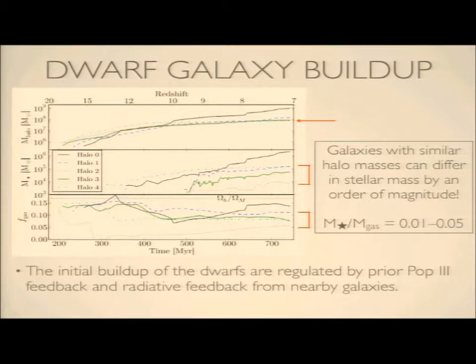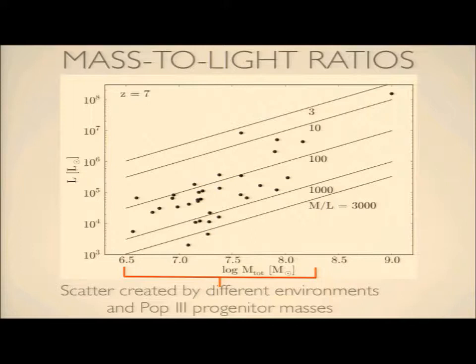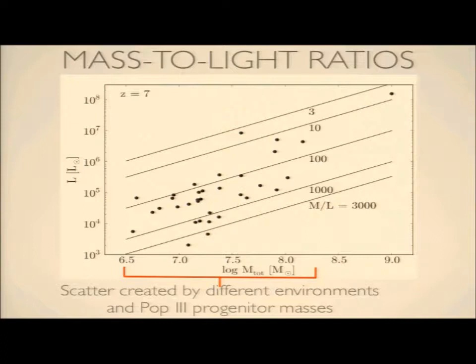If we look at their luminosities versus the halo mass, you can see these low mass halos, which can't cool by atomic line cooling yet, primarily depend on molecular hydrogen cooling — that produces the scatter. Because they can't cool rapidly, they can't form stars very efficiently, so they have a very low mass-to-light ratio between 1,000 to 10,000. But the most massive halos can start forming stars more efficiently through line cooling and get lower mass-to-light ratios. The scatter is just due to what kind of population three star their progenitor hosted.